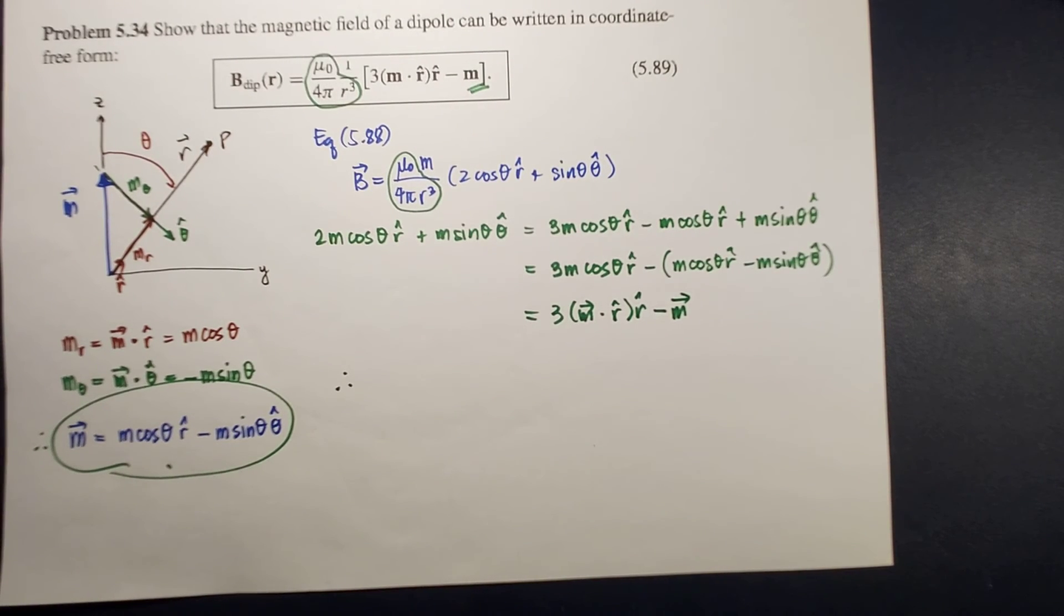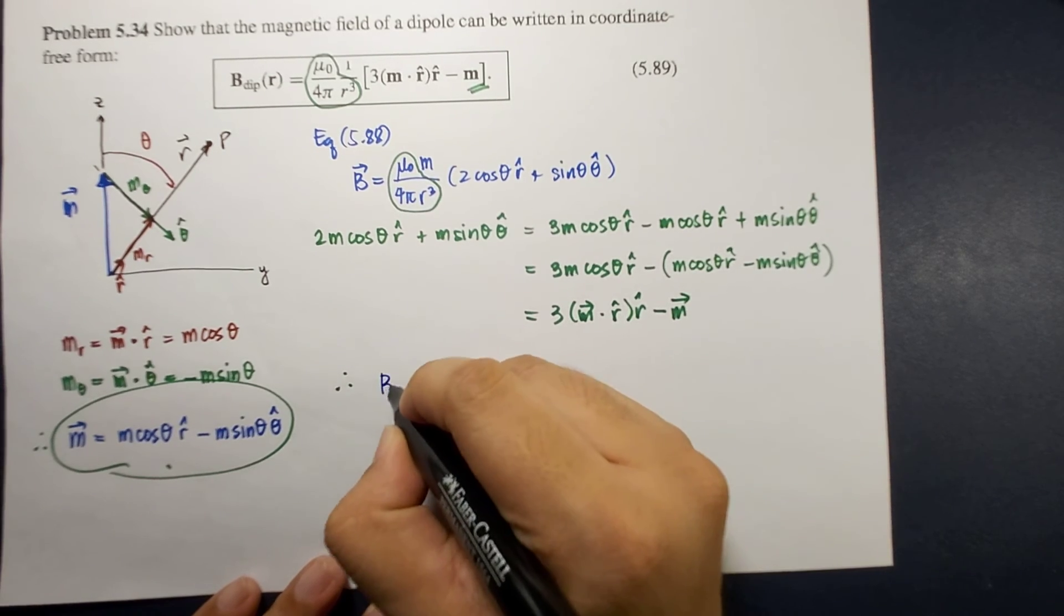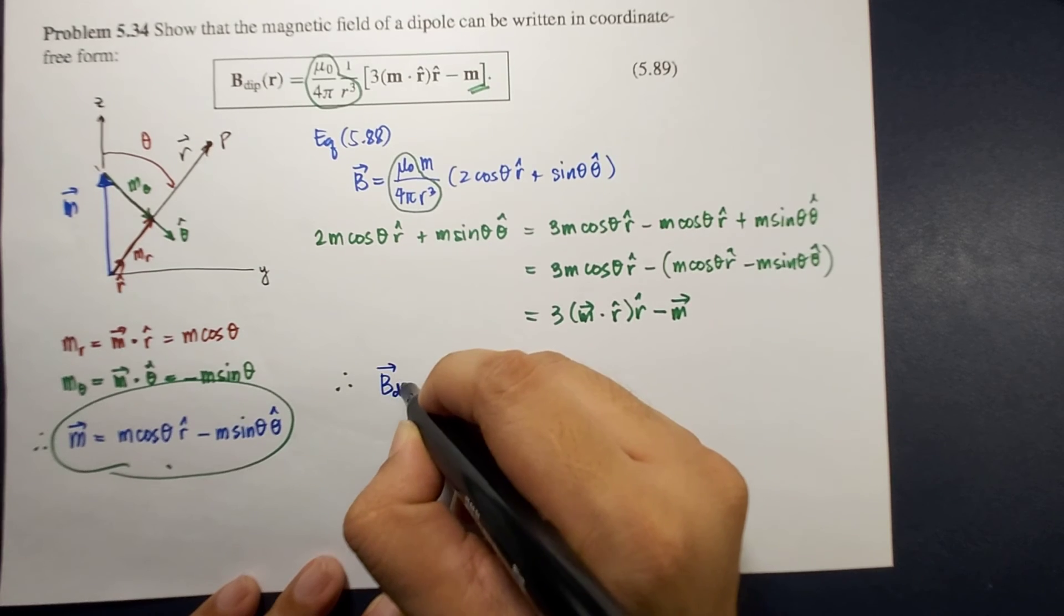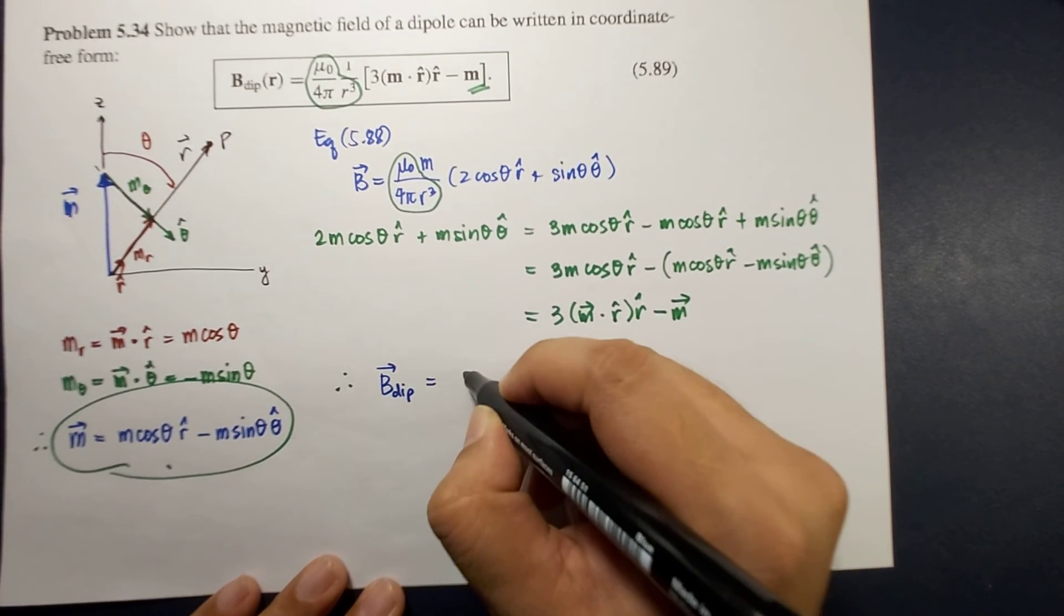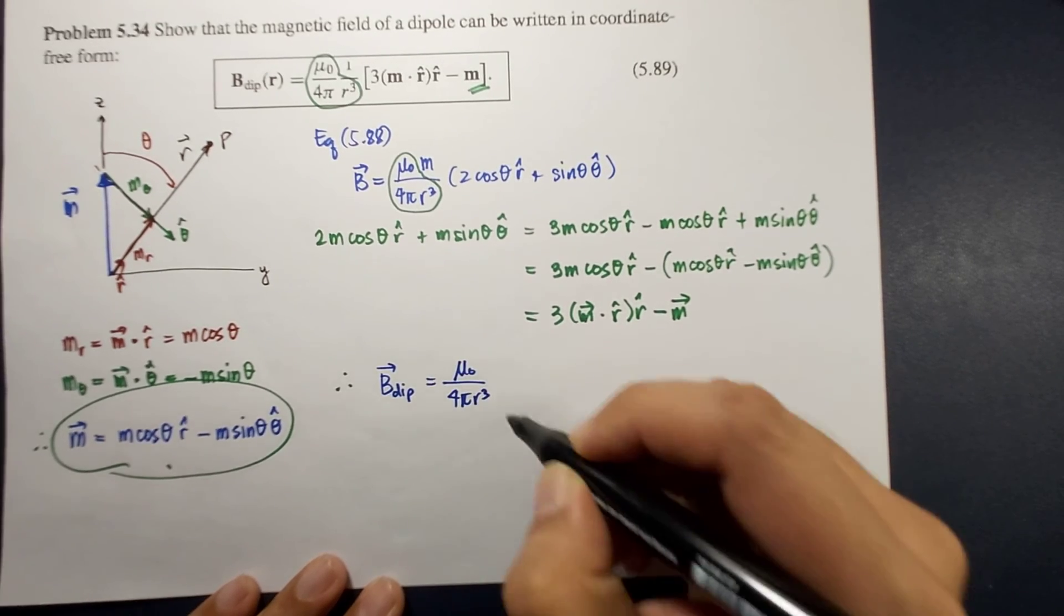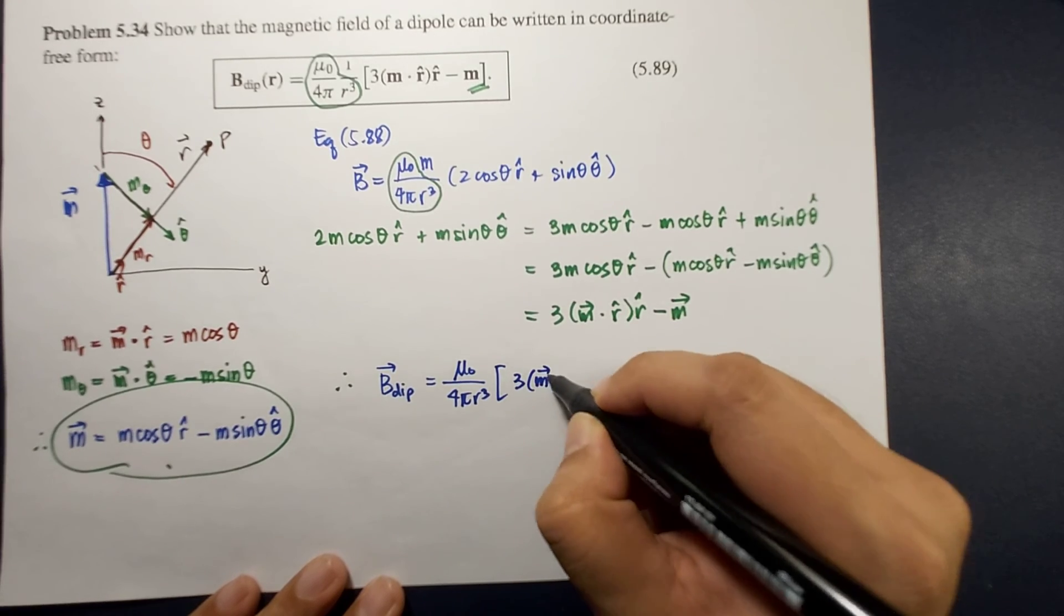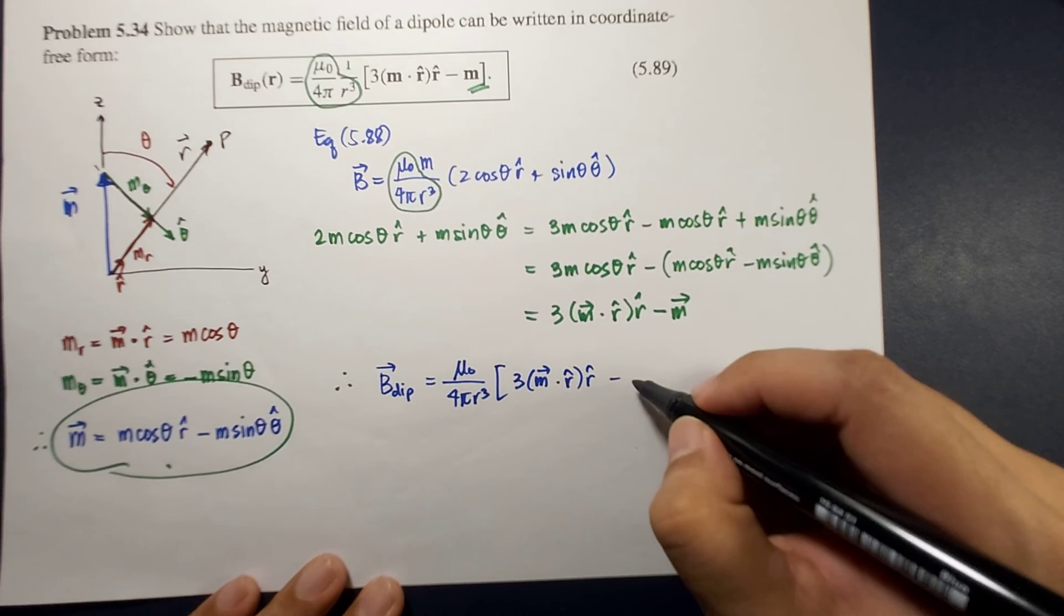the magnetic field in its coordinate-free form will now be equal to mu naught over 4 pi r cubed times 3 m dot r hat r hat minus m.